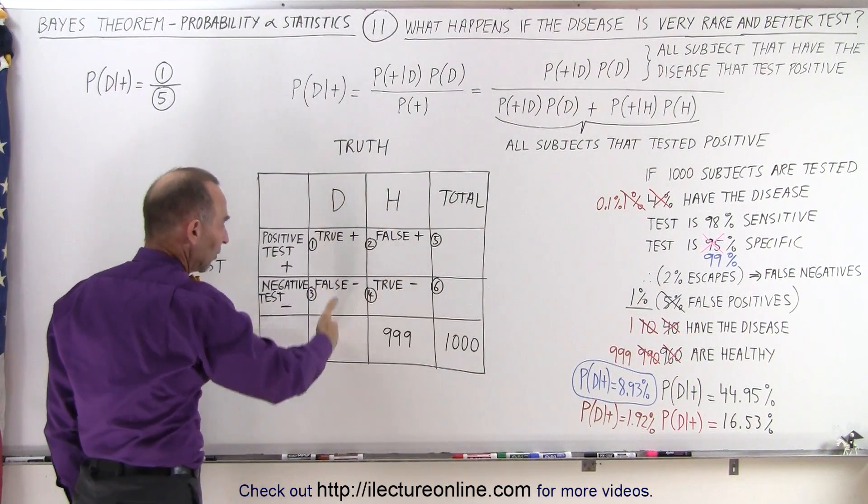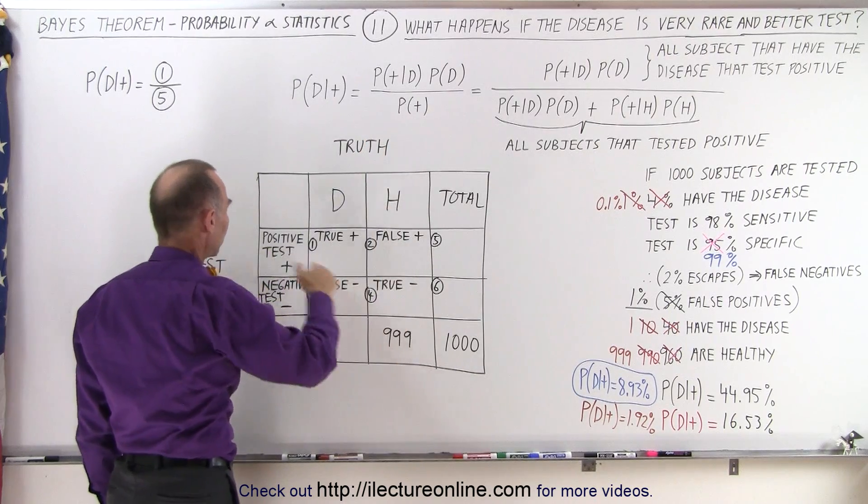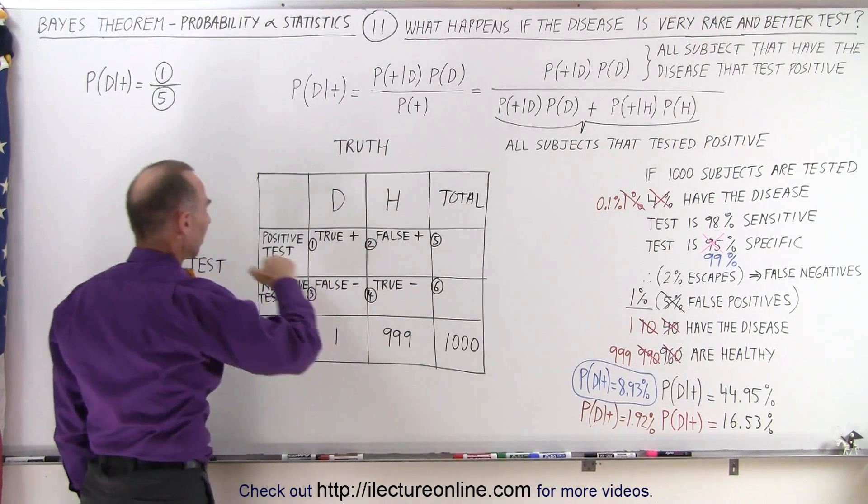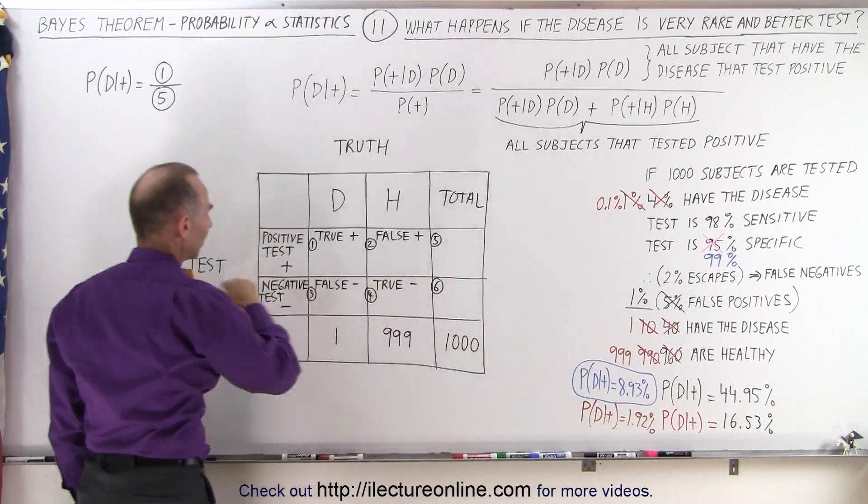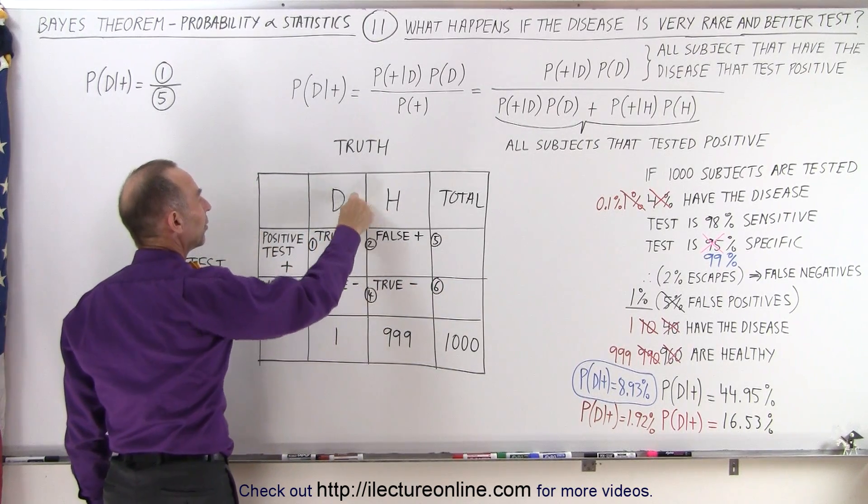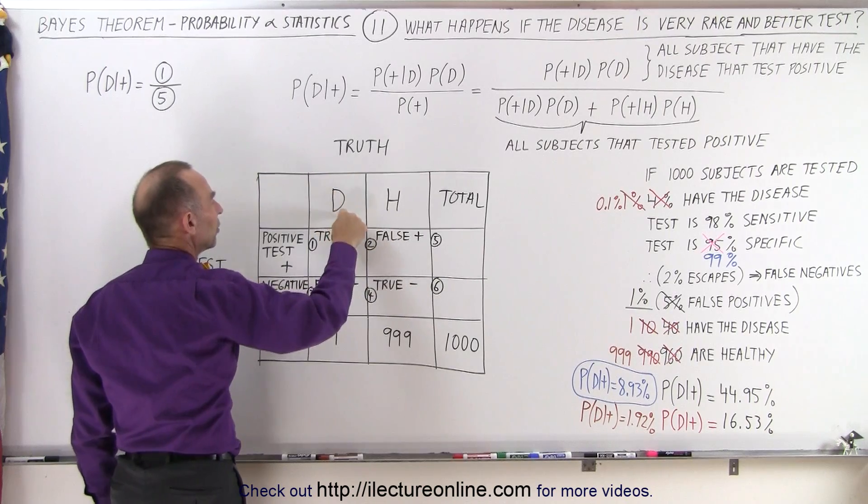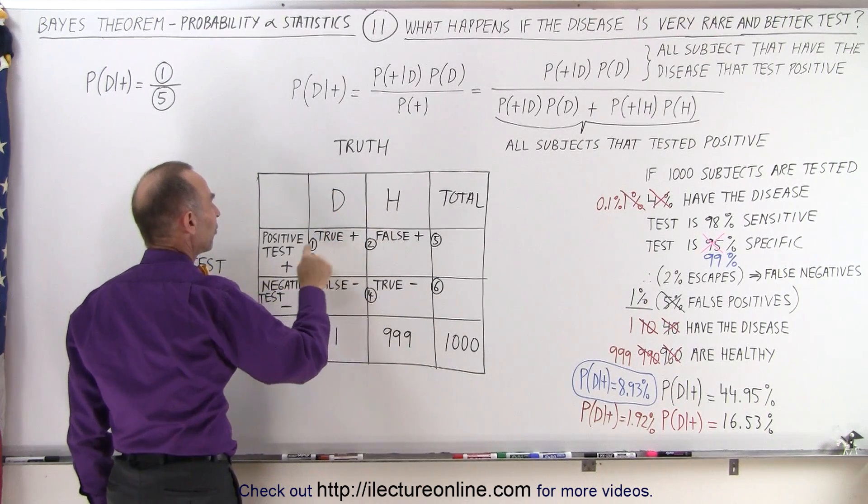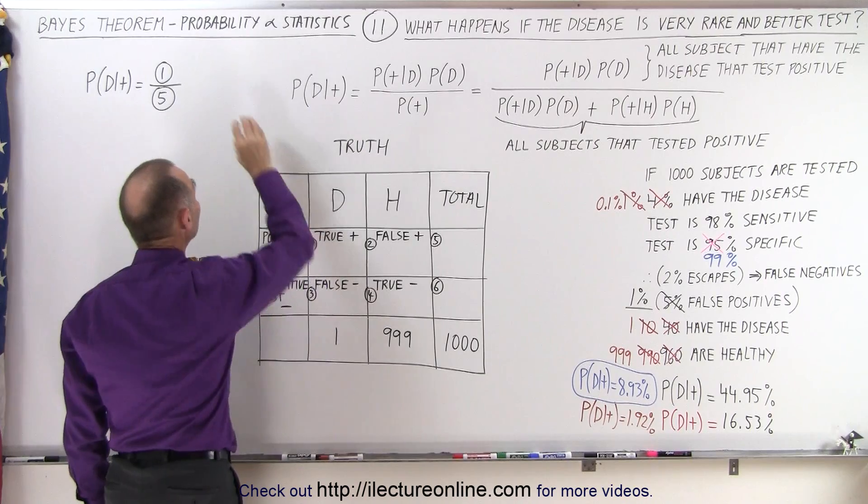So these are the people that have the disease, these are the people that are healthy. These are the test columns: these indicate positive tests, these indicate negative tests. So what goes in here is for those people that have the condition, if they test, they will test positive. That goes in here. We take that